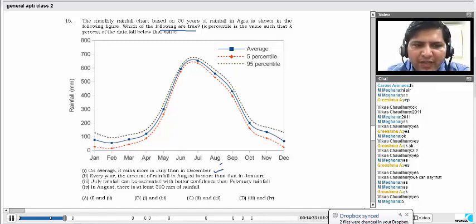Second statement, every year, the amount of rainfall in August is more than that in January. False. One is true. Two is false. Let's start eliminating answer options.